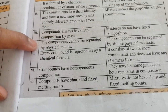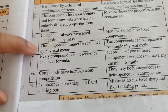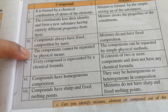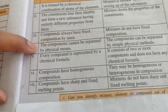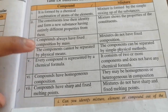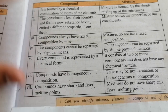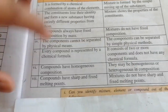For compounds, the components cannot be separated by simple physical means — chemical methods are required. But for a mixture, you can separate the components using physical methods directly.